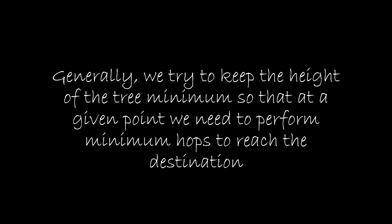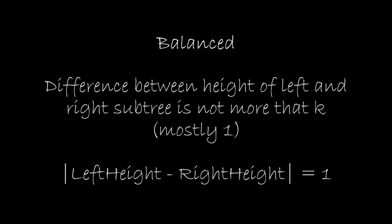Generally, we try to keep the height of a tree minimum so that at any given point we need to perform a minimum number of hops to reach the destination. Remember, if a tree is a perfect binary tree, the maximum time required to reach a particular node will be equal to the height of the tree — so more the height, more the time needed. If a tree is a skew tree, the height is equal to the number of nodes minus 1, making it equivalent to a linked list. Thus, we try to keep a tree balanced. For a balanced binary tree, the difference between the height of the left and right subtree is not more than k, where k is mostly 1.